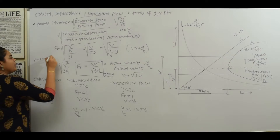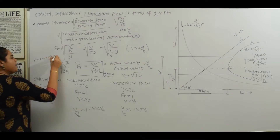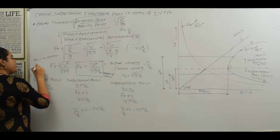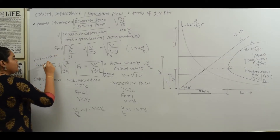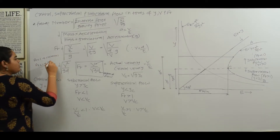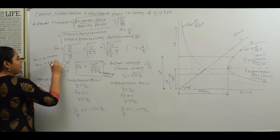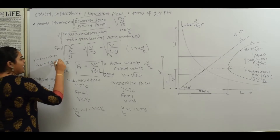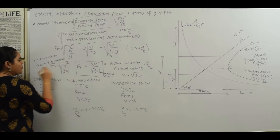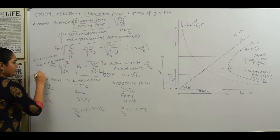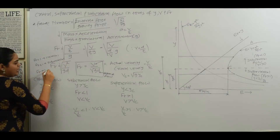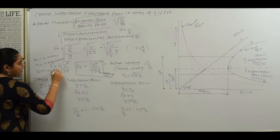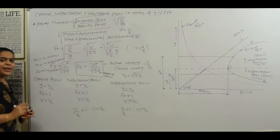For the Froude number: if the Froude number equals 1, the flow is critical. If the Froude number is less than 1, it is subcritical flow. If the Froude number is greater than 1, it is supercritical flow.